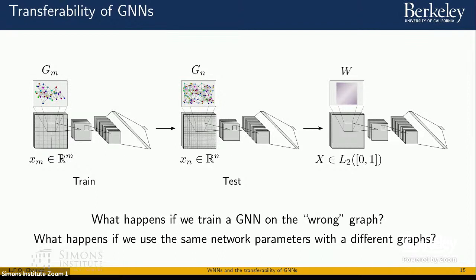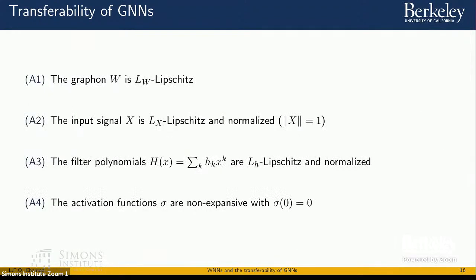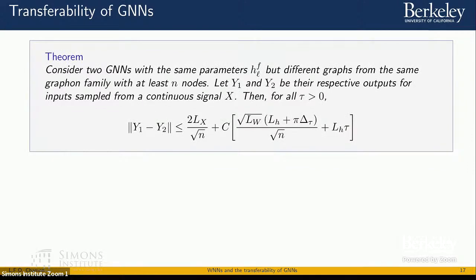The graphon being the limit object for graphs that converge in density of homomorphism also gives us a handle on spectral properties. For example, cycle homomorphism densities are traces of powers of the adjacency matrix, giving control over the spectrum. Smoothness properties of these limit objects can then be connected to differences in the outputs between networks, which is exactly what our result does: we connect the smoothness of the graphon, of the input signal, and of the polynomials induced by the filter coefficients to differences in output between two graph neural networks from the same graphon family.